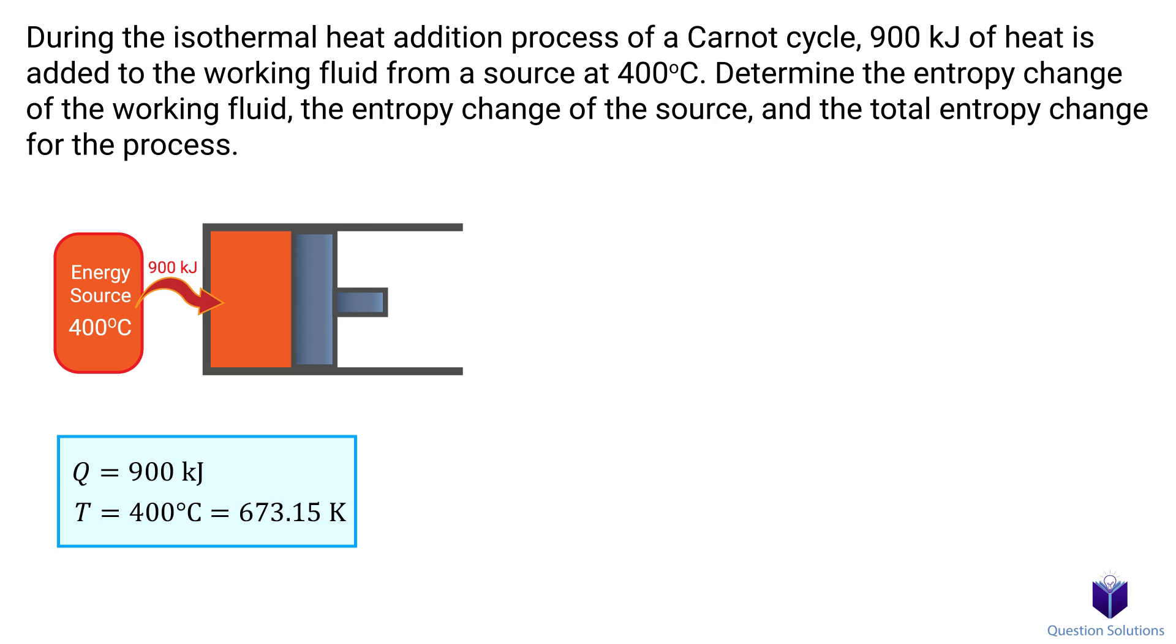So we know that our source added 900 kJ of energy. In other words, the working fluid gained 900 kJ of energy. So using this equation, we can write it like this. Remember that in Carnot cycles, the heat transferred from the source will be equal to the heat transferred to the working fluid. In simple terms, they both will have the same temperature. Let's solve.